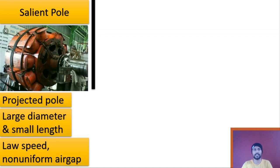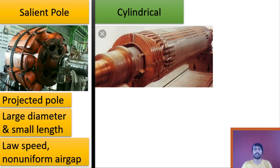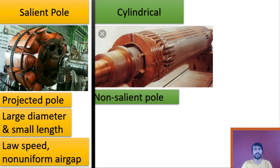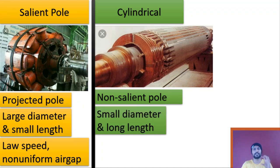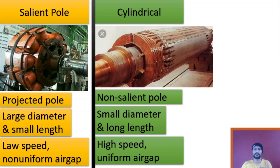Now let's see the cylindrical type rotor, which looks like this. The another name of the cylindrical type rotor is non-salient pole rotor. This rotor is small in diameter and longer in length, as you can see in this image. Because of the lesser diameter, this rotor can rotate at high speed, and because of its circular nature it has a uniform air gap distribution between stator and rotor.